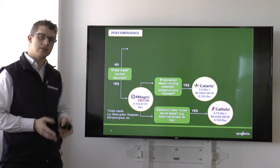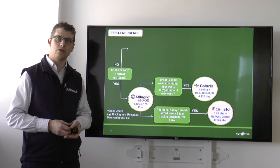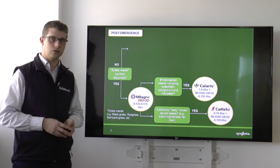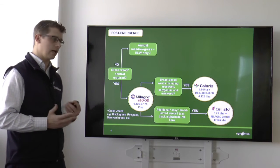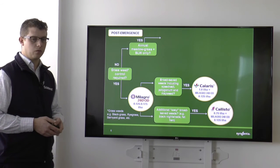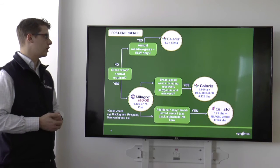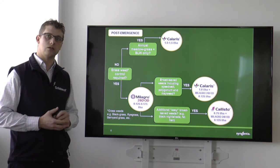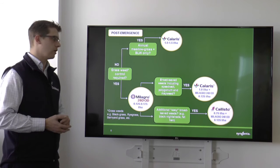So if we are in a situation where we're fortunate enough not to be too worried about the grass weed control, and it's just things like annual meadow grass and broadleaf weeds only, then perhaps we would go with just a Kolaris at a litre to a litre and a half per hectare.